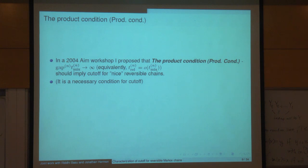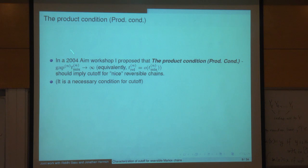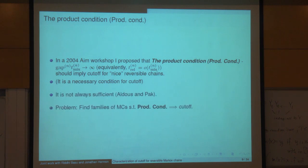For instance, in the cycle, the spectral gap is order 1/N², the mixing time is N², and there's no cutoff. However, even before that workshop, David Aldous pointed out that this can't be true in complete generality — there are examples where this condition holds but there's no cutoff. And Igor Pak gave another example.